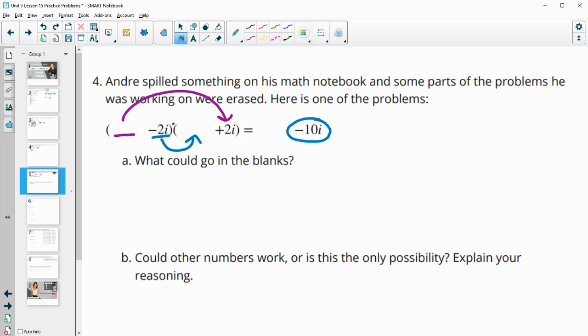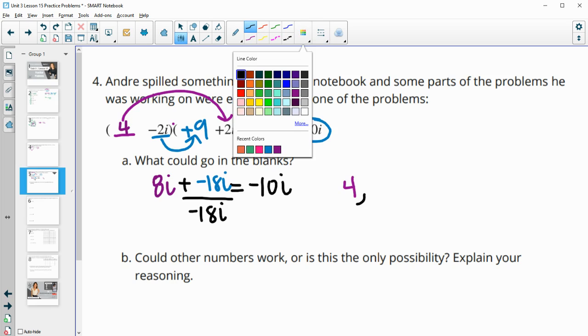So if we put, like, let's just pick a number here. So if I put 4 in here, 4 times 2i would be 8i. So now we have to figure out what we would put here so that we total negative 10i. So this number right here would need to be plus negative 18i to get down to negative 10i. So then I could put negative 9, or sorry, positive 9 here. So negative 2 times 9 would give us negative 18i. So 4 and 9 could go in there. So our two numbers that we could put are 4 and 9.